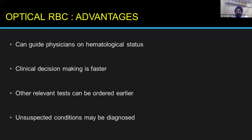Optical RBCs have some advantages: they can guide the laboratory physician on the hematological status faster. Sometimes the indices conceal more than they reveal — they are like statistics. Sometimes some other relevant tests are ordered a little later in the day. So by having a look at the optical RBCs, sometimes you unearth more than what you would from all the indices put together.